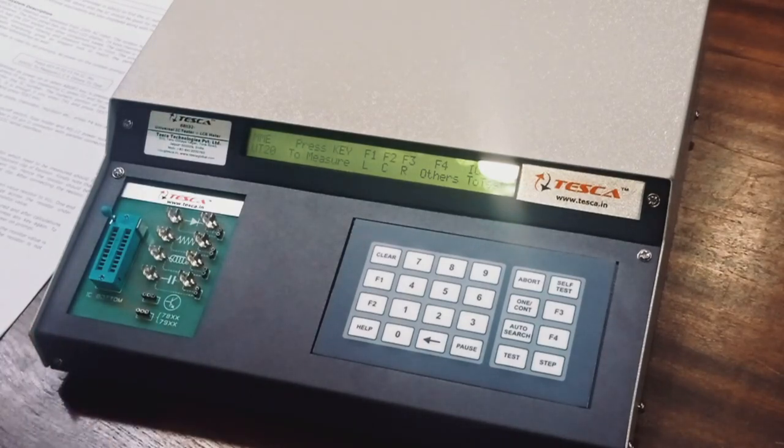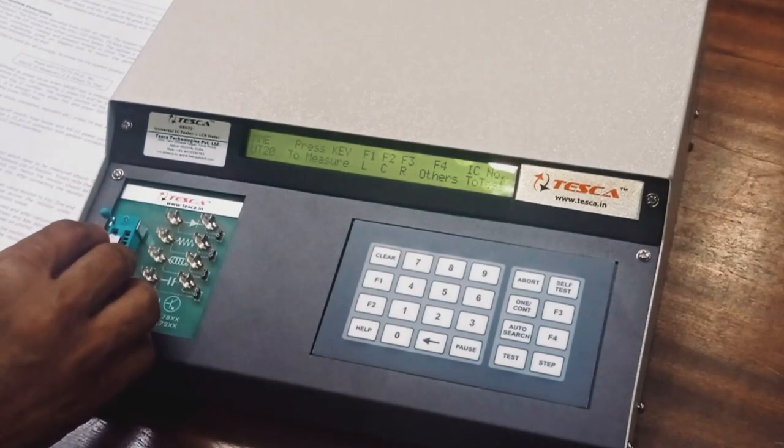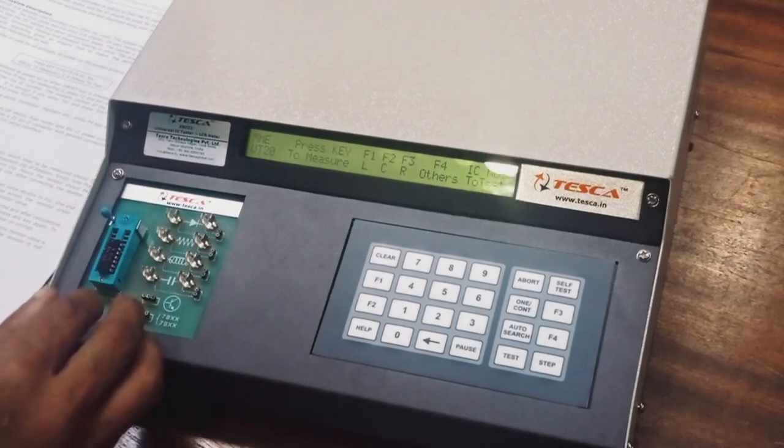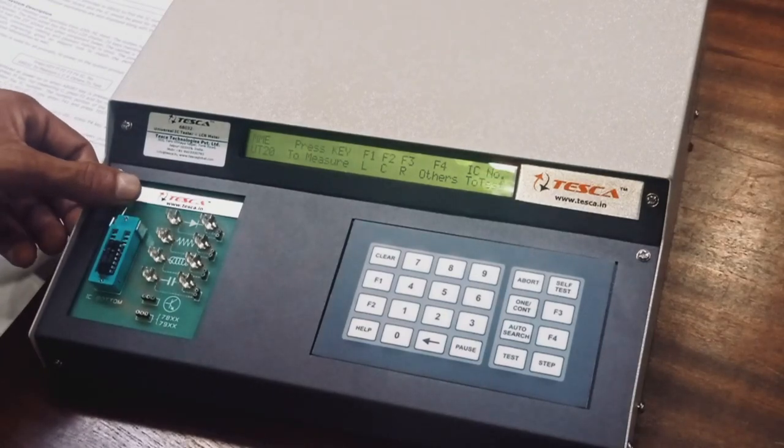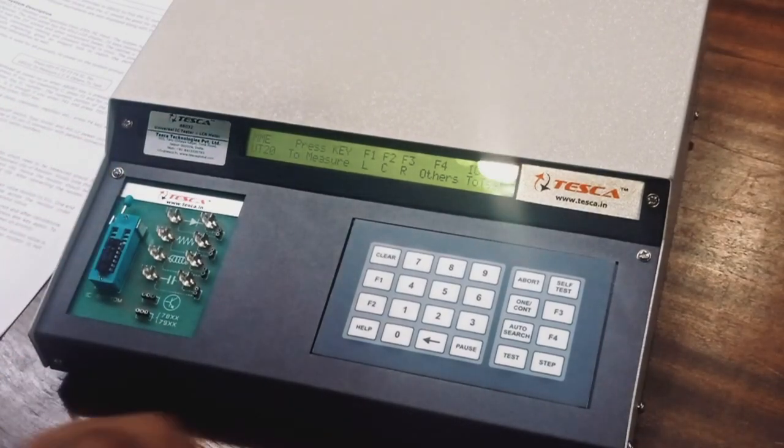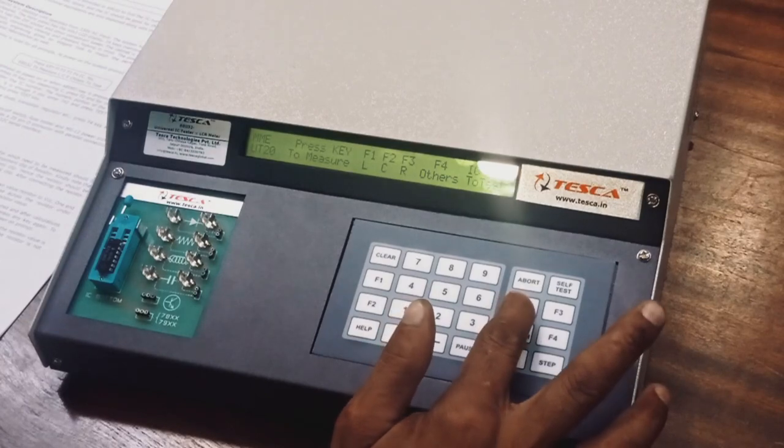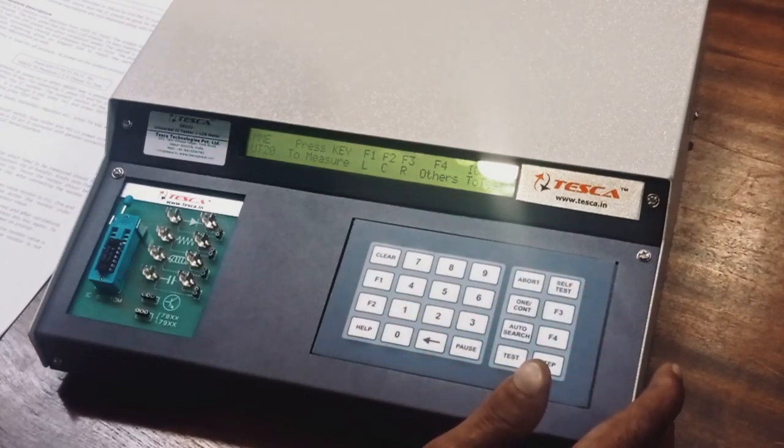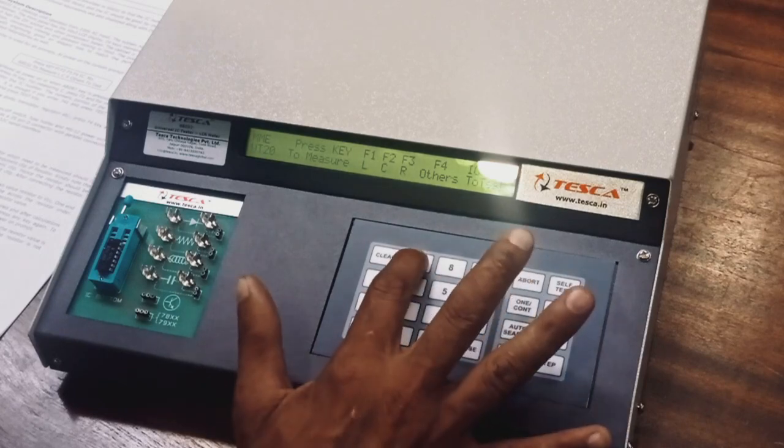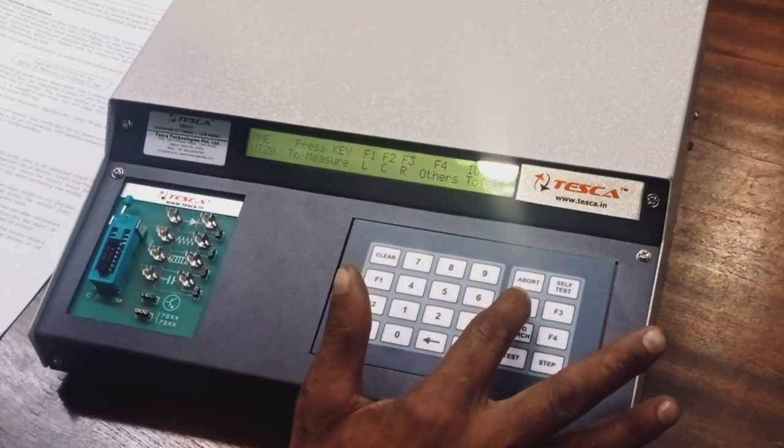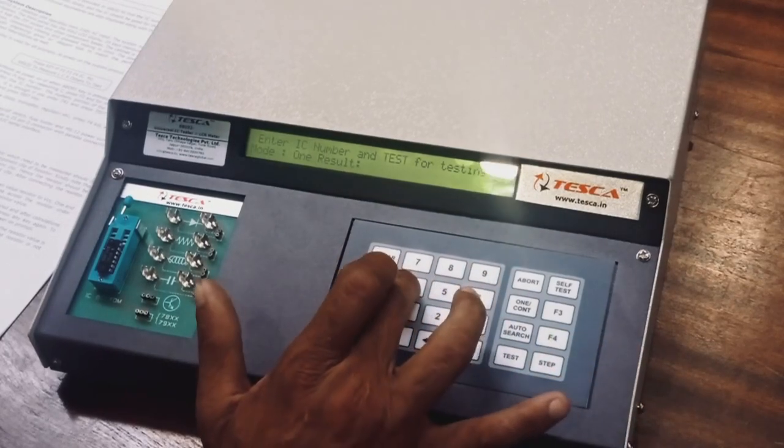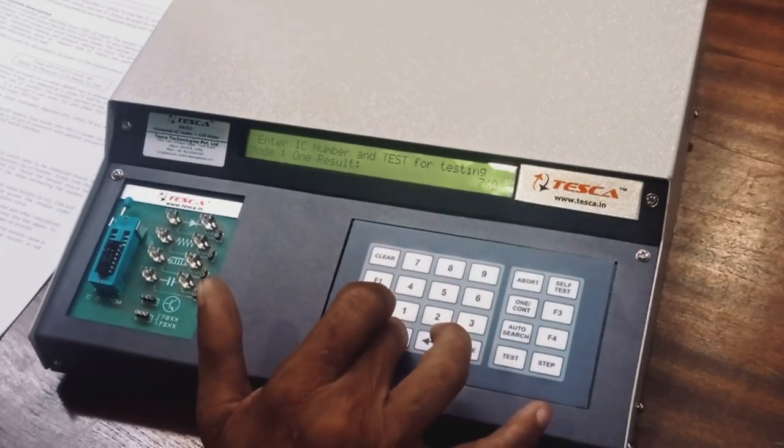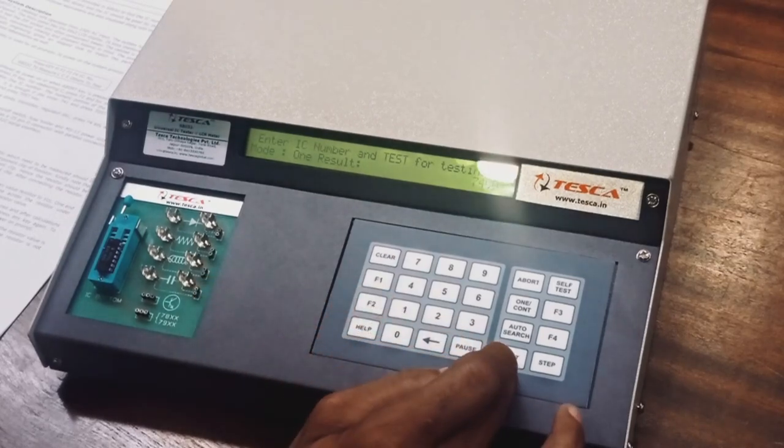Now, we are going to test our IC 7400. We have to put this IC there. First pin will be there, near to this slot pin. After that, we have to insert the IC name. And it is 7400. We press 7400 and we have to press Test.